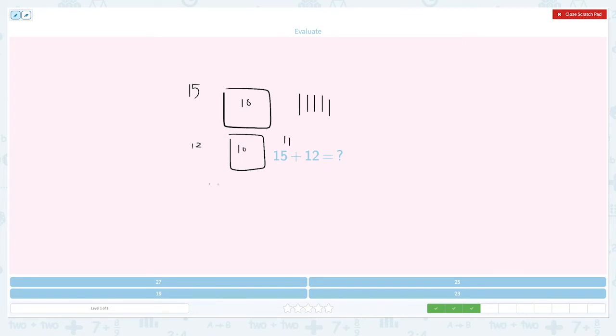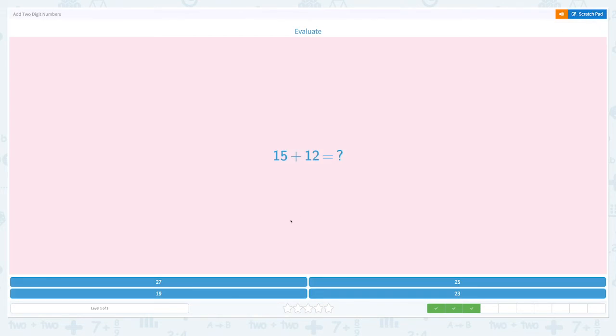And 12 means I have 1 ten and 2 ones. How many ones do I have? I have 1, 2, 3, 4, 5, 6, 7. How many tens do I have? I have 1, 2. So the answer is 27. Close scratch pad and click the right number. Super.